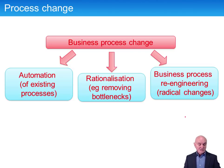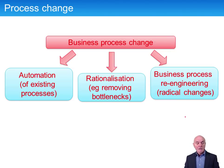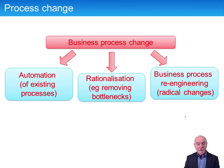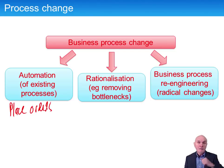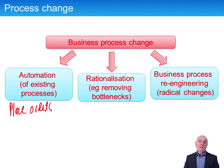Now we come on to business process change. There are three degrees of change. First, automation: simply doing by computer what used to be done manually — in wages and salaries, receivables ledger, and placing orders. In a supermarket, goods are scanned as you leave, inventory records are updated, and when inventory falls to reorder level, the computer system itself places an order to replenish goods.